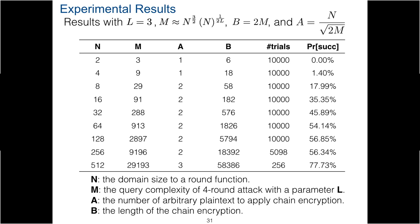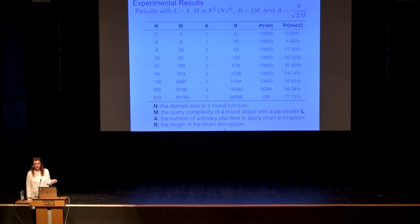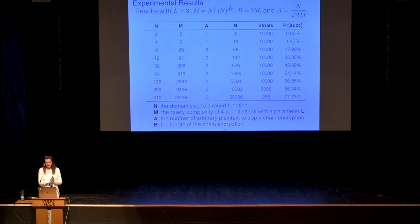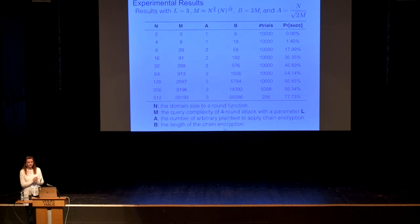The experimental results for the FF3 attack show N as the domain size to the round function and M as the query complexity to the four-round Feistel network attack, with parameter L set to three. Larger L gives better success probability. A is the number of arbitrary plaintexts for the chain encryption, and B is the chain length. If you use N equal to two — encrypting two or three bits — our attack couldn't succeed. But as N gets larger, the probability of fully recovering all eight round functions gets higher, approaching close to one. For our experiments, we achieved full recovery around 78% of the time.